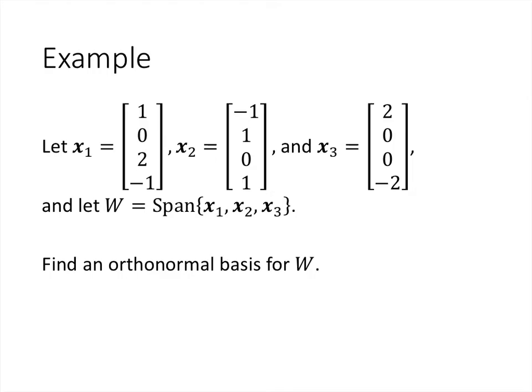So let's take a look at an example. So here we have three vectors in R^4, and we want to let capital W be the span of those three vectors. And what we want is an orthonormal basis for W. Now I'm leaving out the portion where we actually check that x1, x2, and x3 is a basis for W. What we would have to check there is that these three vectors are linearly independent. But we know how to do that by row reducing the matrix whose columns are x1, x2, and x3. So let's move on to using the Gram-Schmidt process to find an orthonormal basis.